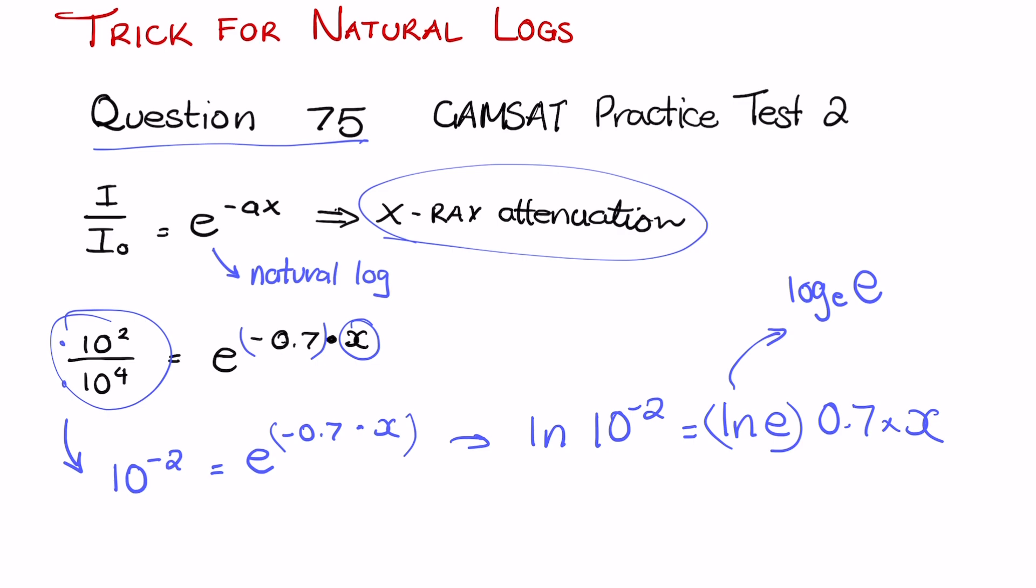Just to reiterate this, log₁₀ 10 is just equal to 1. In the same way, logₑ e is 1. So we can cancel this out. So in order to calculate this equation, we have ln(10⁻²) equals 0.7×x.